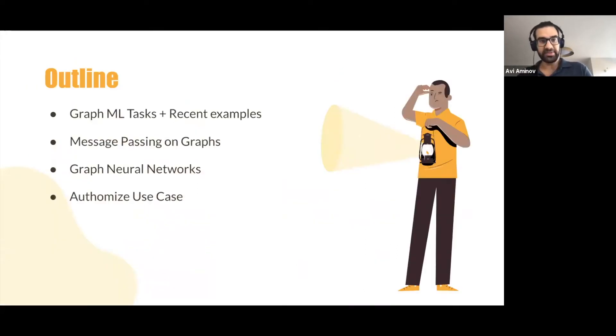So the outline of the talk, I'm going to talk a little bit about graph machine learning tasks and examples of how these tasks were solved efficiently and gave great expressive power using graphs in the recent decade. I'll talk a little bit about message passing on graphs. This is a classical work, but it serves as a basis for graph neural networks, which are generally an extension of message passing. And if time allows, I'll talk about how we did a small POC on our data, and we hope to expand it later.